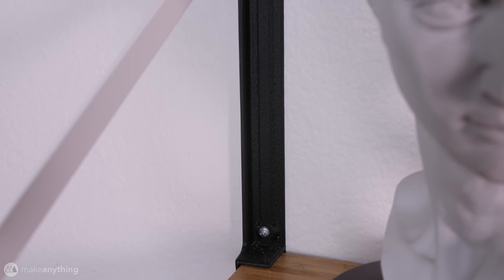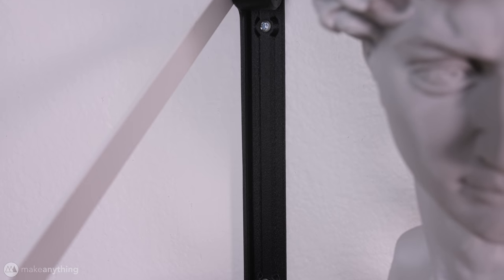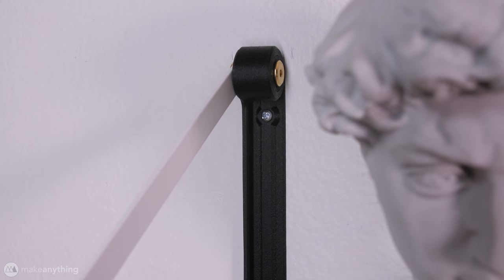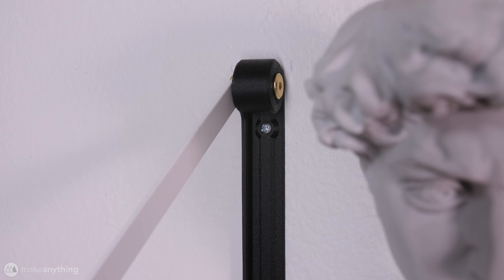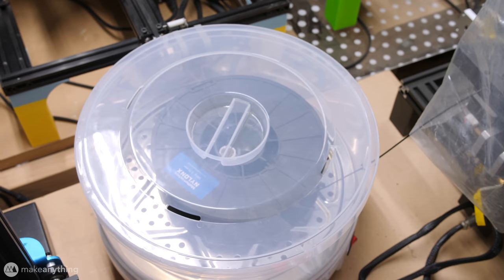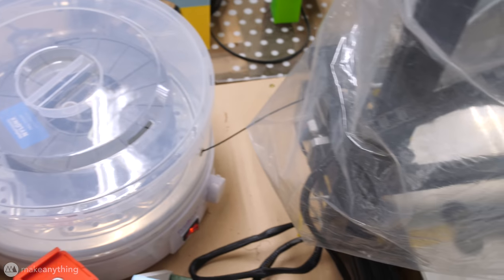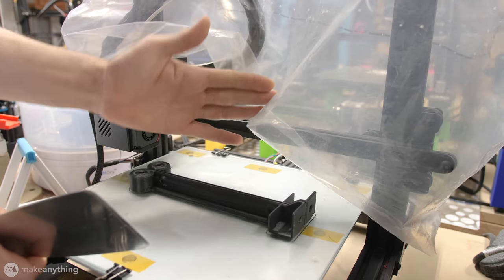At this point you might be thinking that I'm awfully trusting in these 3D printed parts to hold up this whole shelf and all my prized prints. And I am, because I've got a secret weapon. It's called Nylon X Filament. This is a filament provided by Matterhackers and it's a nylon carbon fiber composite filament that creates crazy strong parts.